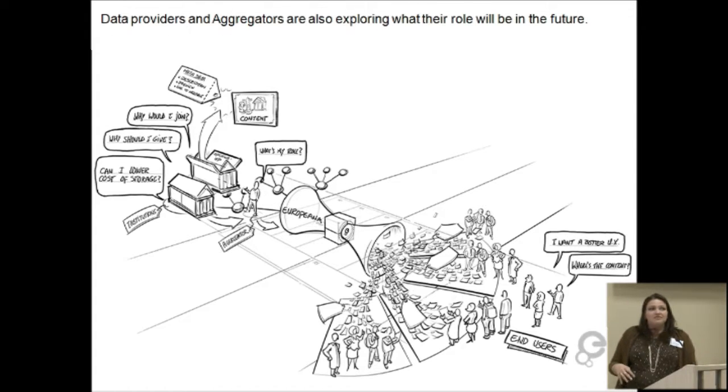We also have to look at the supply side of the equation and look at the aggregators and the data providers who provide us with the metadata. At the moment, they're still trying to decide what their role is in the future, in Europeana, in Europeana Cloud, and what they want and how this all works, which makes writing requirements quite challenging, because if you don't know what your problems are, you can't really solve them. So, to try and meet all of these challenges, Europeana Cloud was born. We're nine months into the project. We've run the workshops, which have got these wonderful figures. We like imagery.